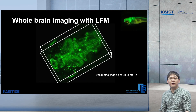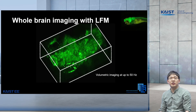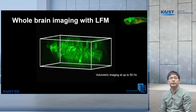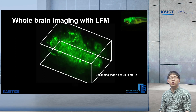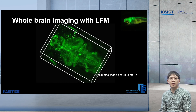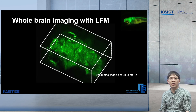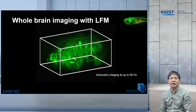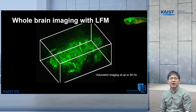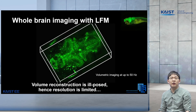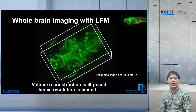Here's an example video of the fish brain. You can actually see the neurons blinking here and there, which correspond to neuronal activity. We were able to image the brain activity at extremely high speed — in this case at up to 50Hz — but the price we had to pay was a decrease in resolution. This is because the amount of information that can be captured by a camera is limited by the number of pixels on it. In other words, the volume reconstruction is numerically ill-posed, hence the resolution is limited. Therefore, we wanted to find a solution to solve this problem.